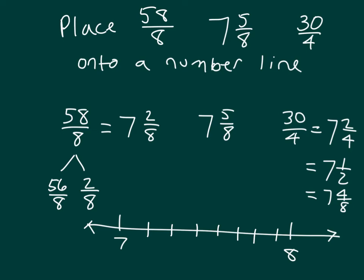That's halfway in between is the 30 fourths, or the 7 and 1 half. We have 7 and 2 eighths right here, which was also equal to 58 eighths. And then the other one we had was 7 and 5 eighths, and 7 and 5 eighths was right here.